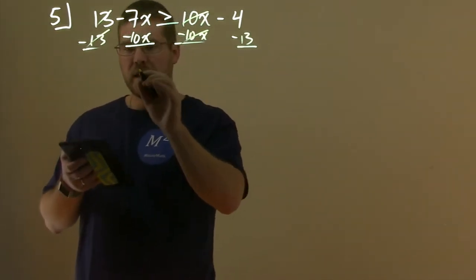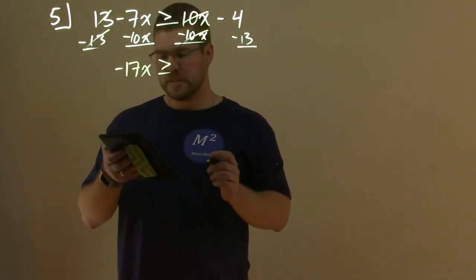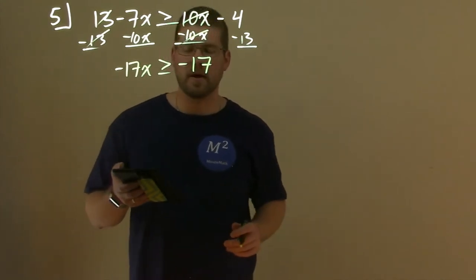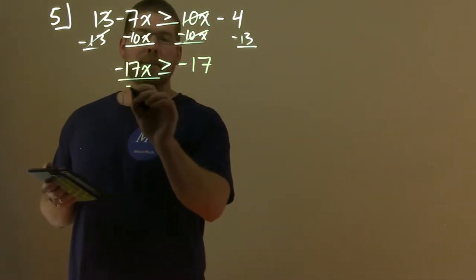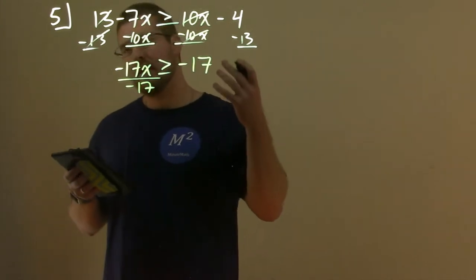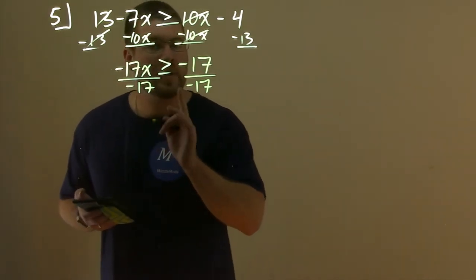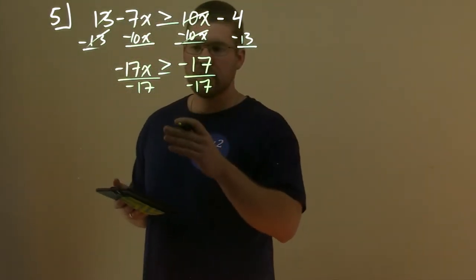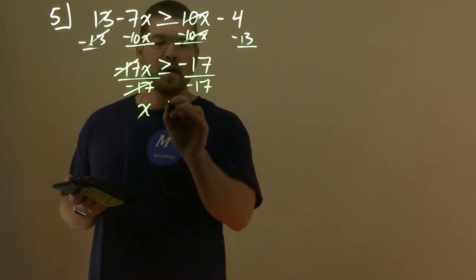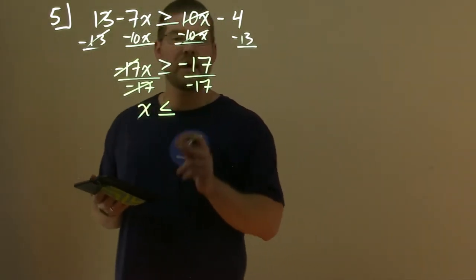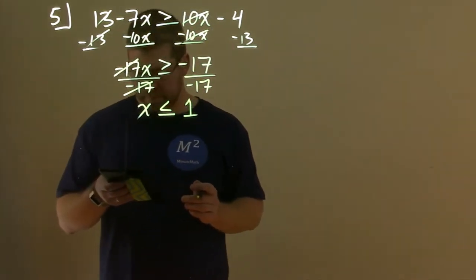Minus 7x minus 10x is a negative 17x. It's still greater than or equal to, and then minus 4 minus 13 is a minus 17. Now we want to get x completely by itself. To do that, we need to divide by a negative 17 to both sides, or multiply by negative 1 over 17, but dividing is a little easier. Now be careful, when we divide over an inequality by a negative number, the sign flips. Negative 17's cancel, giving us a positive x left over. Here's our sign change flipping around, so now it's a less than or equal to sign. And negative 17 divided by negative 17 is a positive 1.